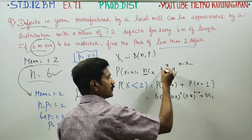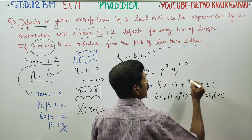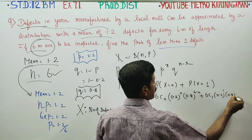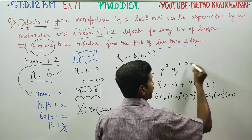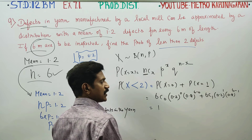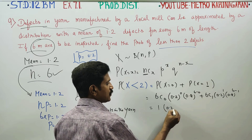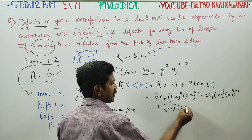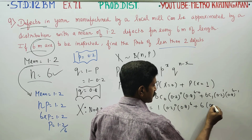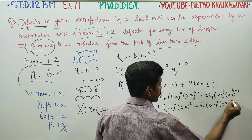For x = 1, we have 6C1 × (0.2)^1 × (0.8)^(6−1), which is 6C1 × (0.2)^1 × (0.8)^5. Simplifying: (0.2)^0 equals 1, so the first term is 1 × 1 × (0.8)^6. The second term is 6 × 0.2 × (0.8)^5.